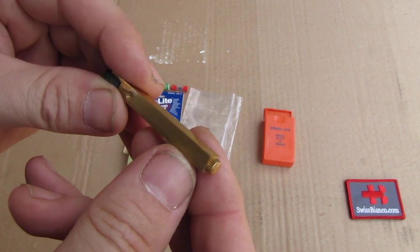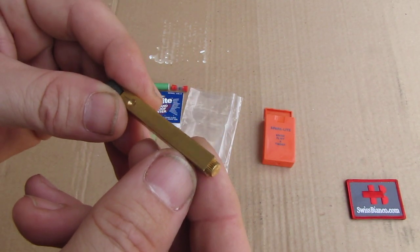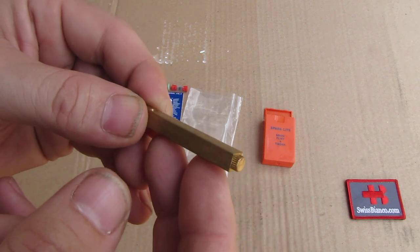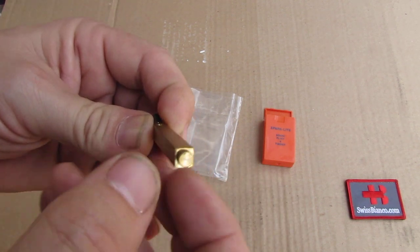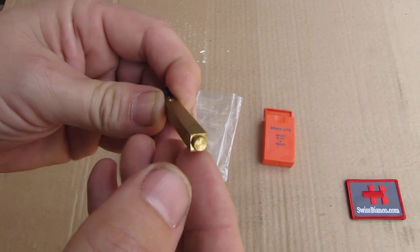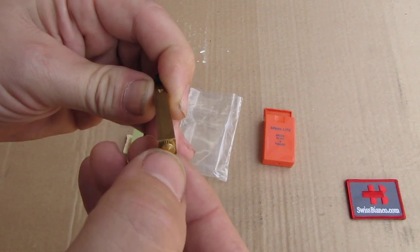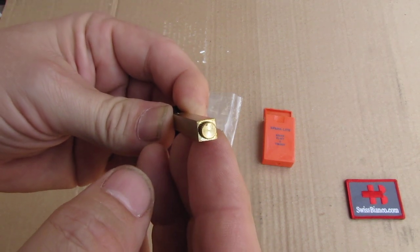The thing is relatively solid, screwed on, should be. So you need pliers or something to remove that. And it would be maybe a good idea to make a slot so you can use a screwdriver in the field.